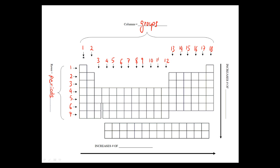Just so you know, this is the current numbering system. However, there is an older numbering system that is still commonly used. This was called the A block — group 1A and group 2A. These guys over here are called the transition elements, which are the B block. The transition elements don't follow periodic trends very well, so it's very hard to predict what properties they'll have. You don't really need to know the numbering system for the B block for our periodic trends.